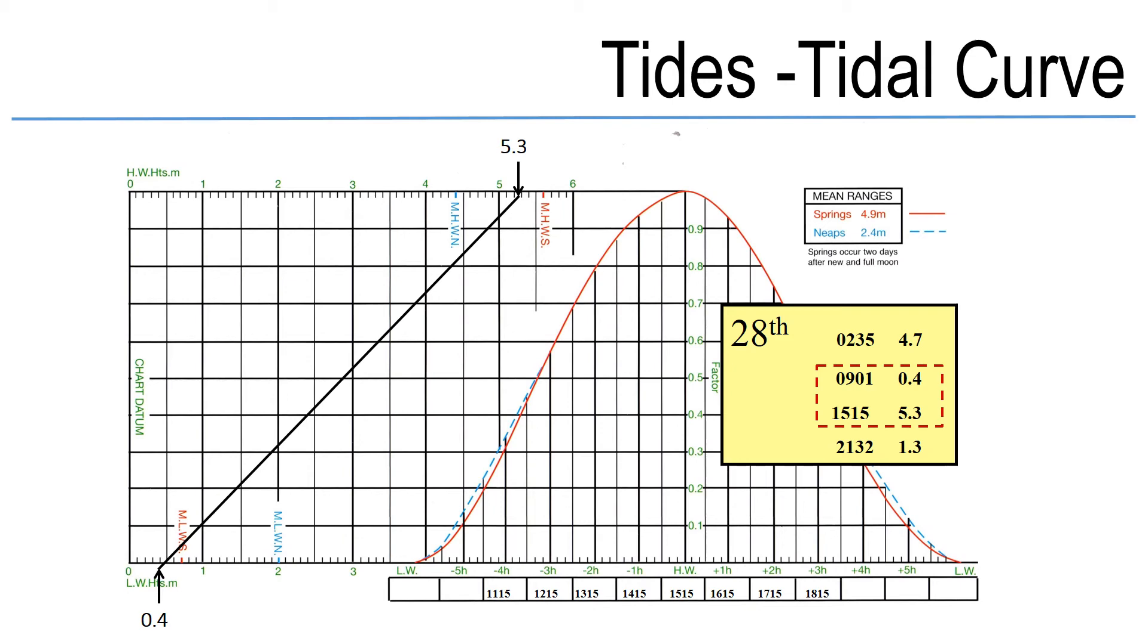I'm now able to use it in two ways. I can either find the height of tide at any given time, or if I'm trying to navigate somewhere where I have a tidal restriction and I need a certain amount of water to get over say a bar, I'm able to use this tidal curve slightly in reverse and work out at what time I'm going to have a certain amount of water.